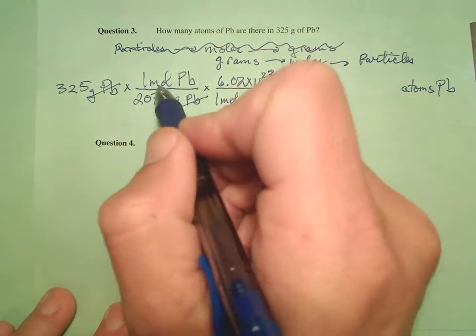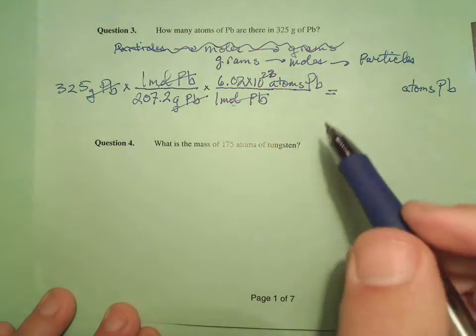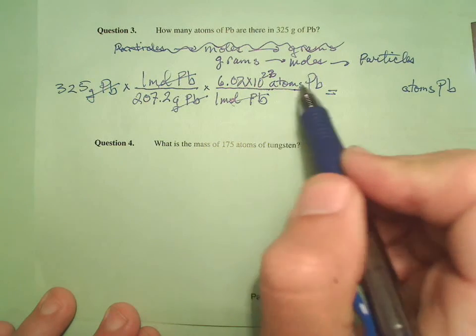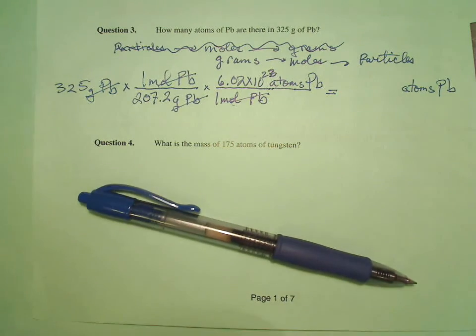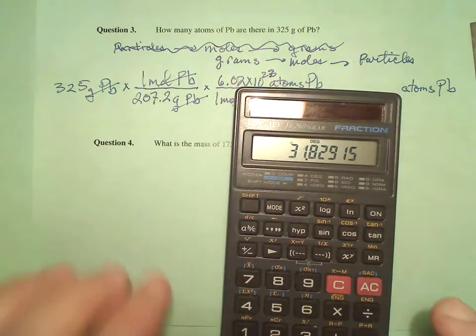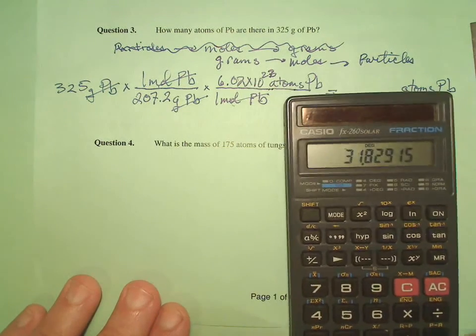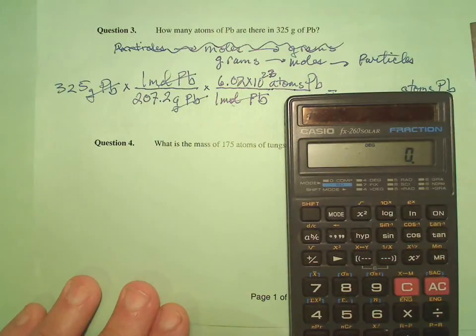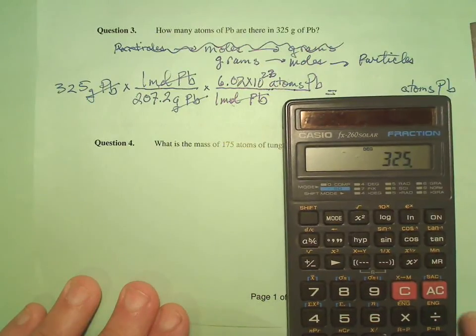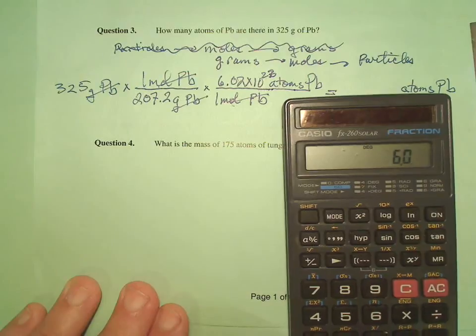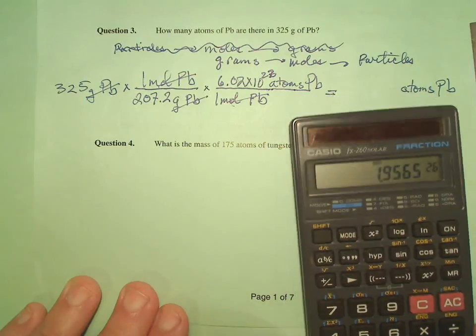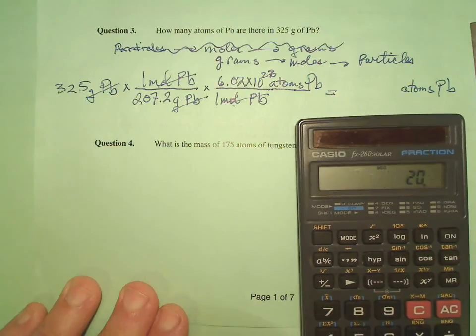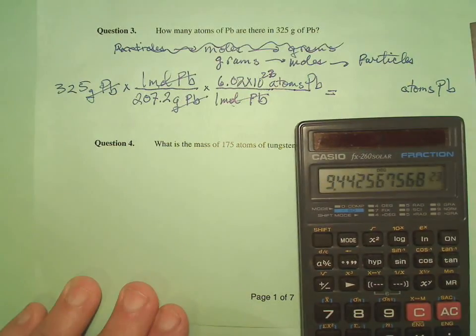Grams lead cancel. Moles of lead cancel. Now we're left with atoms of lead. Let's see how that plays out. So we have 325 times 6.02 times 10 to the 23rd, divided by 207.2, equals.